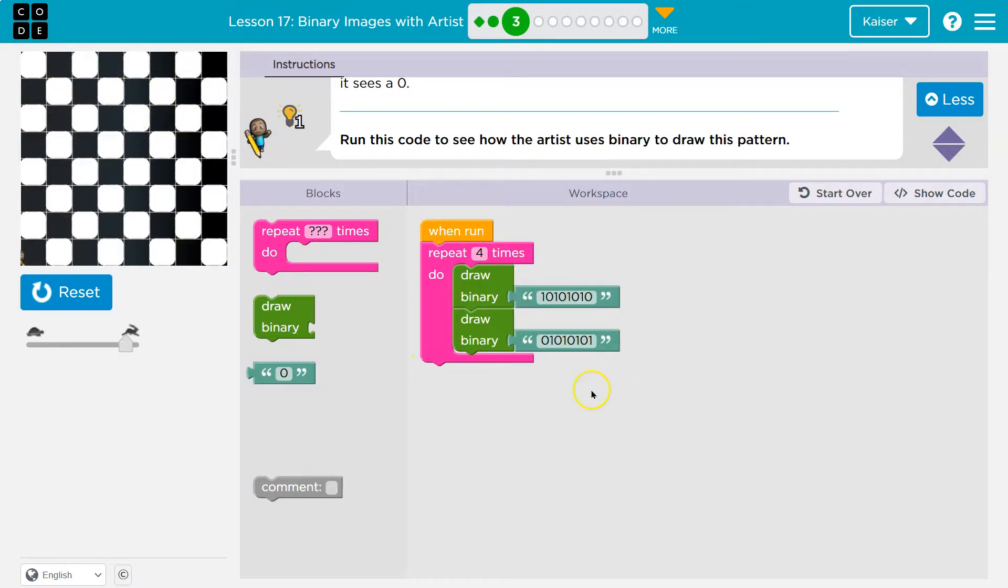In computer language, ones are considered true and zeros are false. So it fills in the white area and leaves alone the zeros.